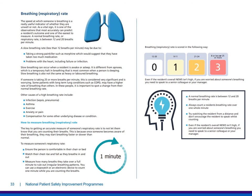As a vital sign, breathing is one of the observations that most accurately predicts a resident's outcomes and is one of the easiest to measure. A normal breathing rate is between 12 to 20 breaths a minute. A slow breathing rate may be due to taking a strong painkiller such as morphine, or problems with the heart, and can occur when a resident is awake or asleep. If someone is taking 25 breaths or more per minute, this is considered very significant and worrying. Some patients with long-term conditions such as COPD may have a higher rate of breathing than others — for these people, it's important to spot a change from their normal breathing rate. Other causes of a high breathing rate include infection, asthma, exercise, anxiety, pain, and compensation for some other underlying disease or condition. A normal breathing rate is between 12 and 20 breaths per minute, and you should always count a resident's breathing rate over a full minute.